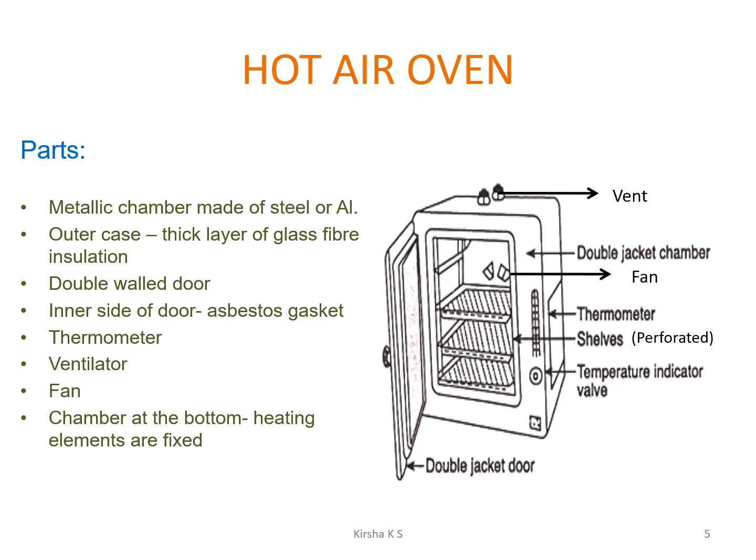The apparatus used is the hot air oven — a metallic chamber made of steel or aluminum. The outer case contains a thick layer of glass fiber insulation to prevent heat conduction outside. It has a double-wall door lined with an asbestos gasket, a thermometer, a ventilator to flush out internal air, a fan for cooling, and heating elements fixed at the bottom. Parts include vent, double jacket chamber, fan, thermometer, perforated shelves, temperature indicator wall, and a double jacket door.